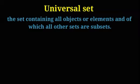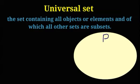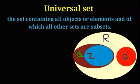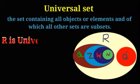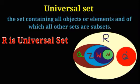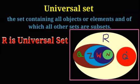Types of sets: the universal set is the set containing all objects or elements, of which all other sets are subsets. In the diagram, R means real numbers, Q is rational numbers, Q' is irrational numbers, Z is integers, W is whole numbers, and N is natural numbers. Here R is the universal set. The universal set is generally denoted by μ, sometimes by U, and is usually represented by a rectangle.